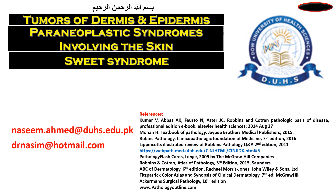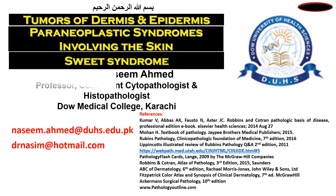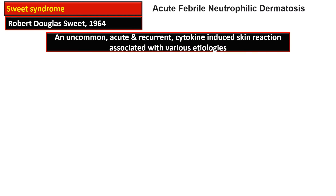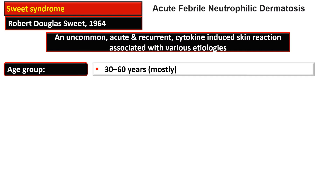In the previous video I discussed the paraneoplastic syndromes involving the skin, where we exclusively discussed acanthosis nigricans. In this video, Sweet syndrome is described. Sweet syndrome is also named acute febrile neutrophilic dermatosis. It was first described by Robert Douglas Sweet in 1964, and it is an uncommon, acute and recurrent cytokine-induced skin reaction that is associated with many etiologies.